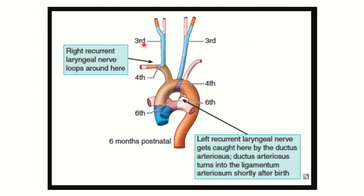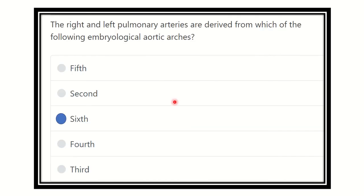Looking at the diagram, we can see the third arch, fourth arch, and sixth arch — there is no fifth arch present. The third arch is the common carotid artery and part of the internal carotid artery; the fourth is the aorta and right subclavian; and the sixth gives the two pulmonary arteries. So the final answer is: the right and left pulmonary arteries derive from the sixth aortic arch.